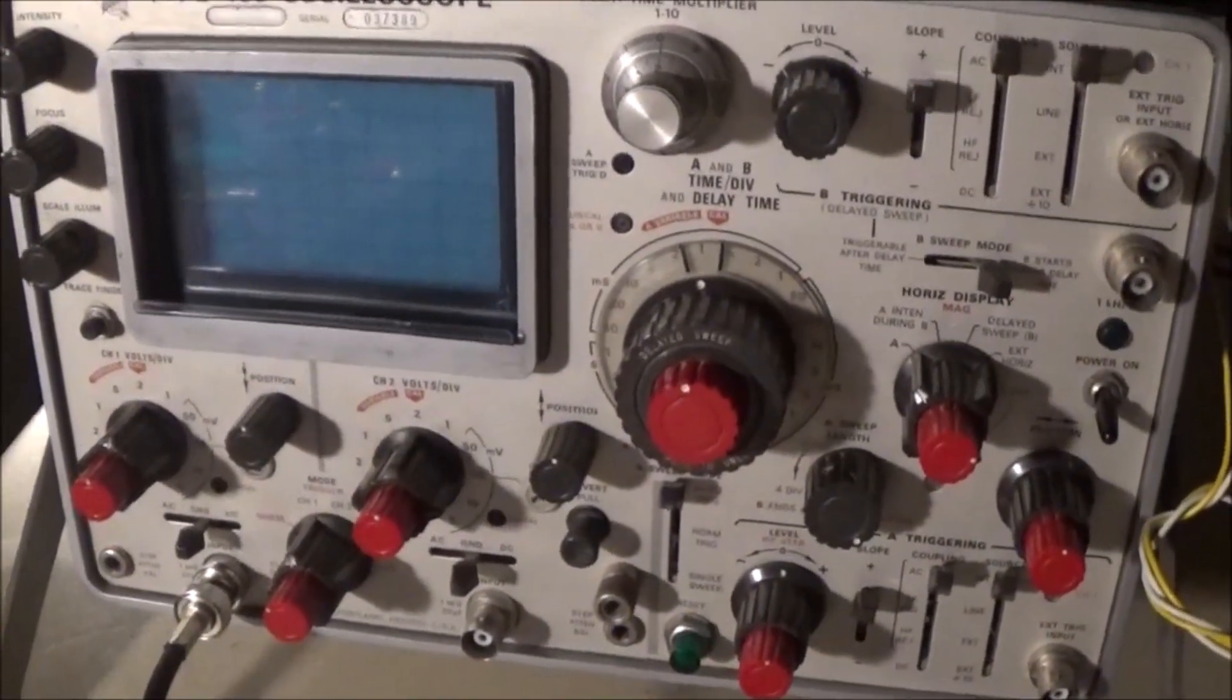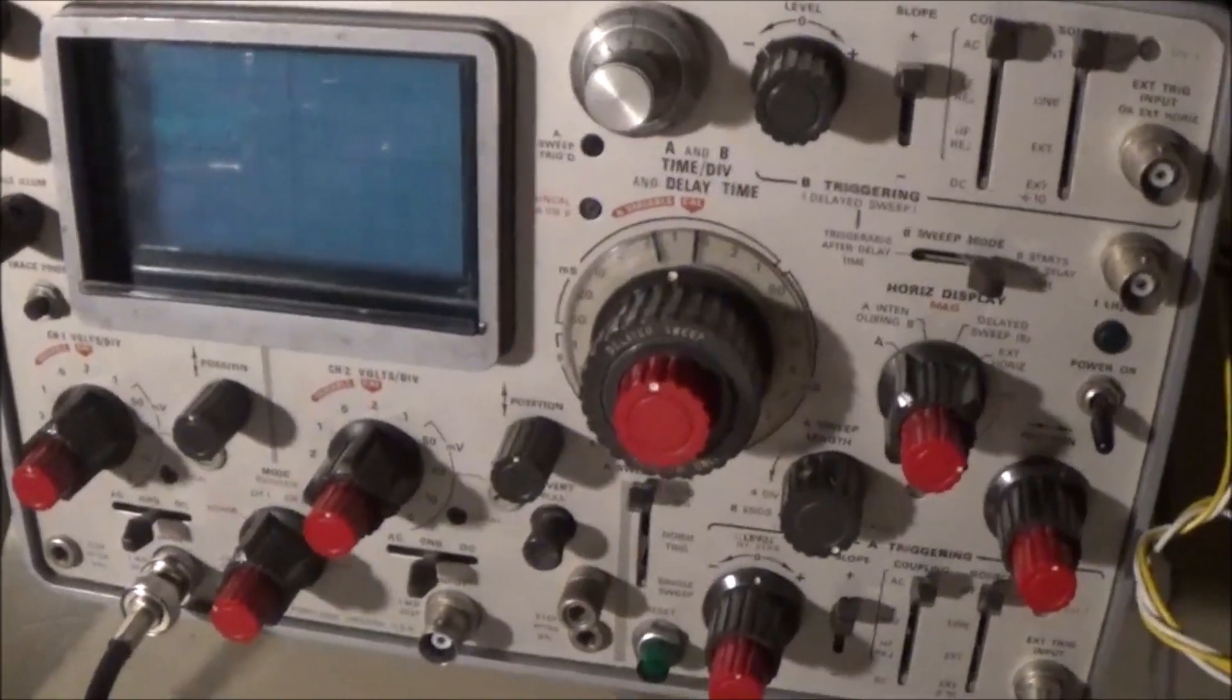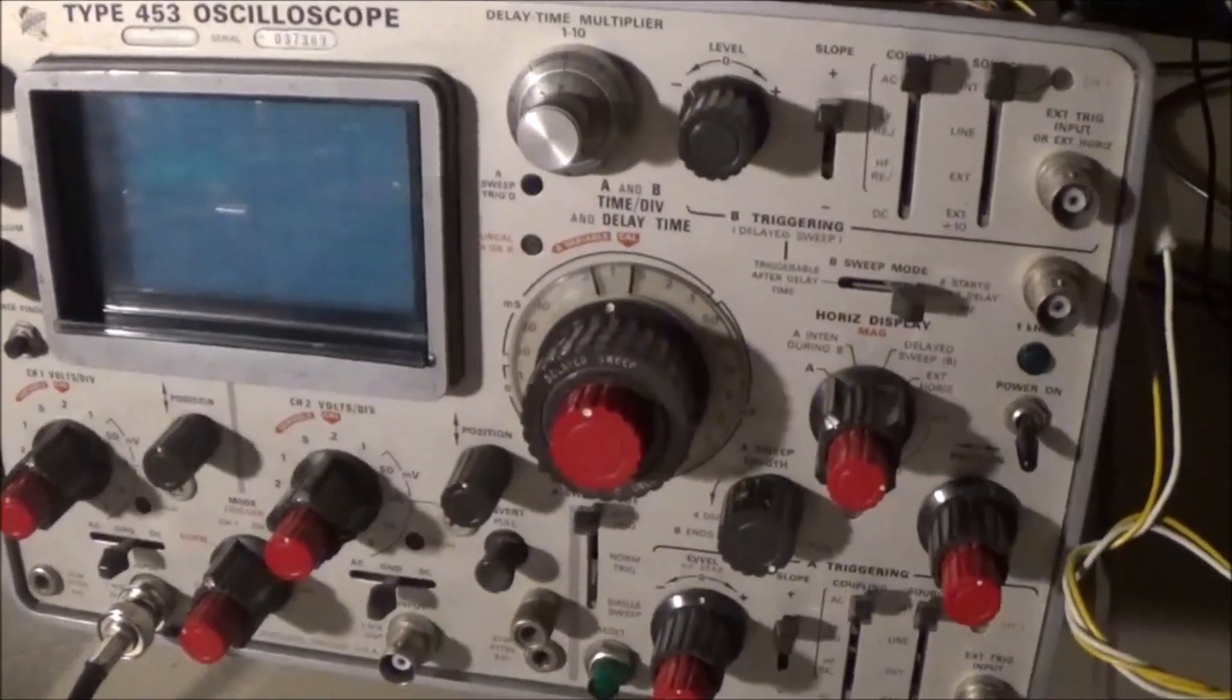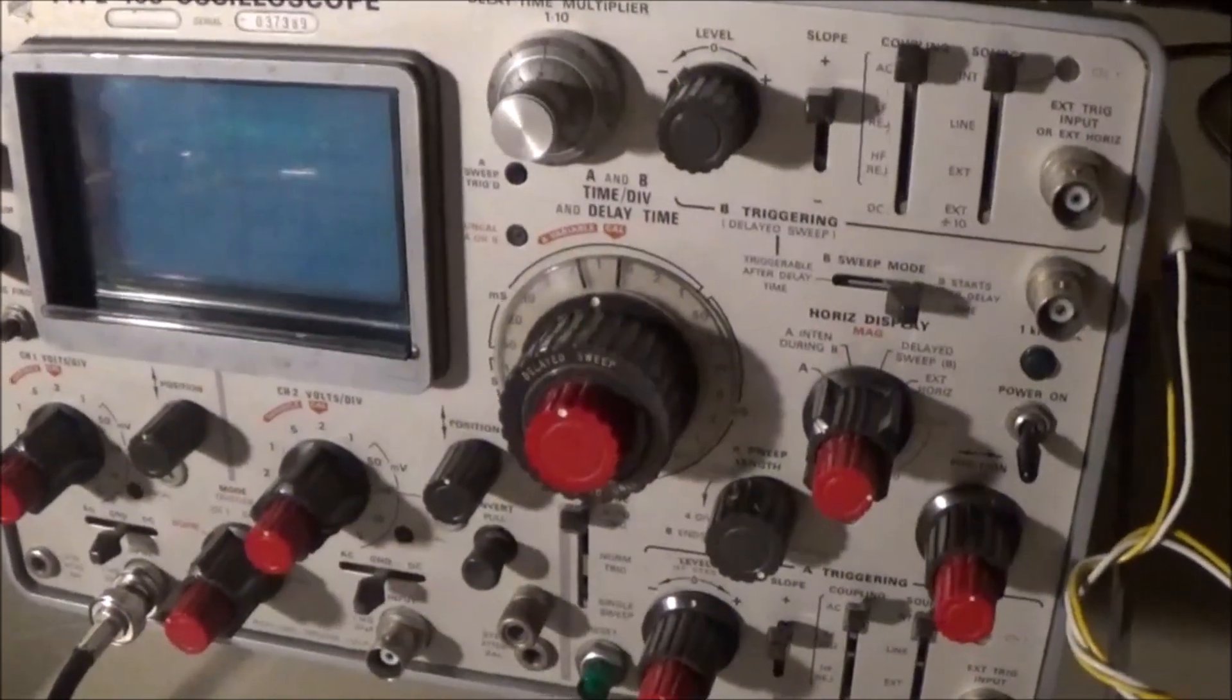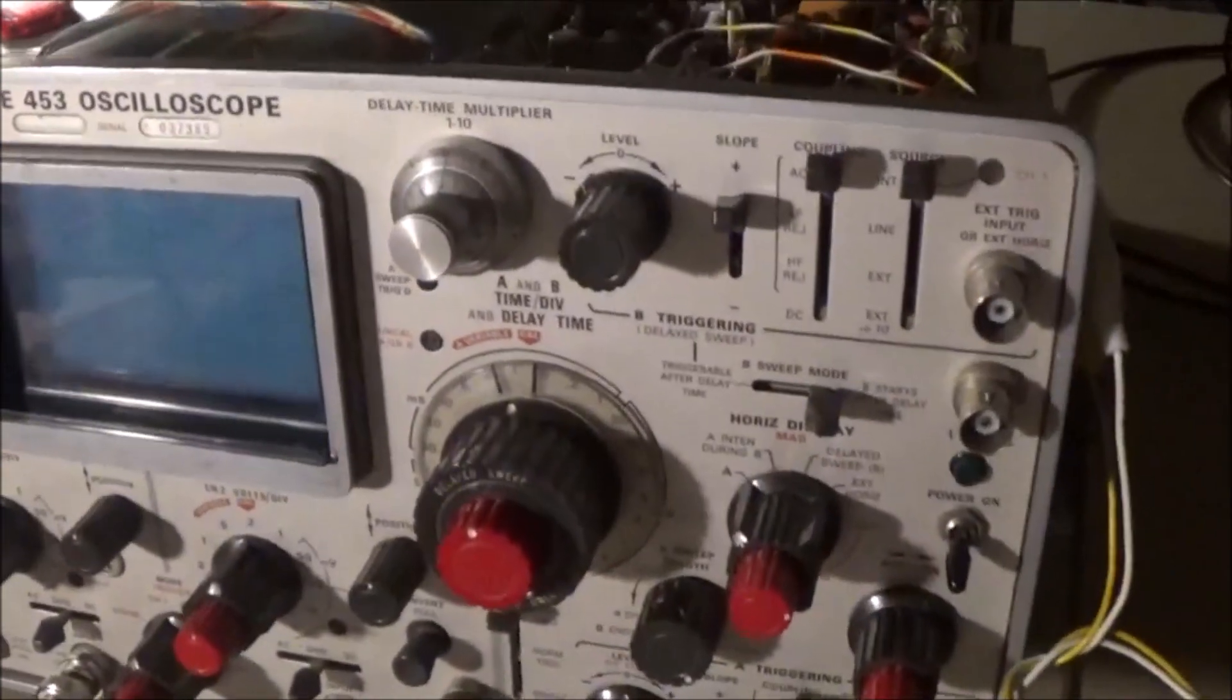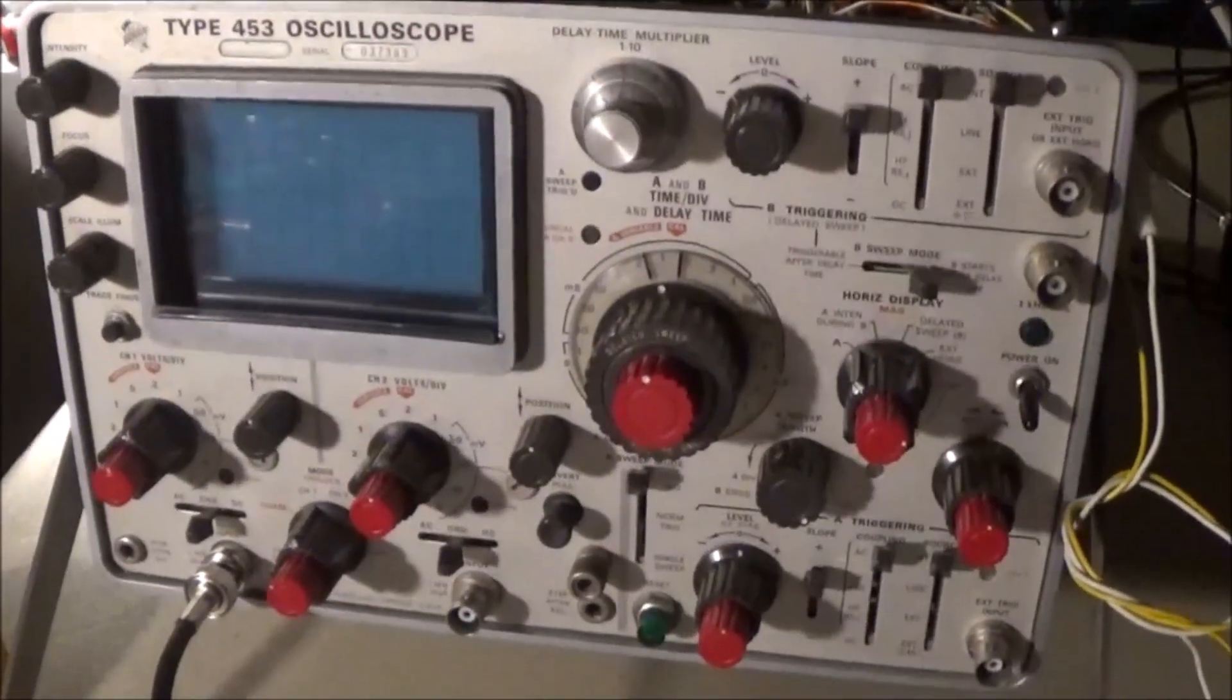This is a Tektronix Type 453 oscilloscope that I've had since 2004 when it was given to me. Near as I can tell it was manufactured right around the time of the Apollo 11 lunar landings, and for that reason I think it's kind of cool.